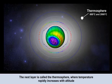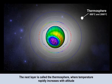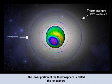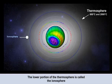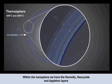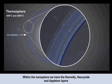Above the mesopause is a layer called the thermosphere, characterized by a rapid rise in temperature up to about 200 kilometres. Temperatures here can be between 600 and 2,000 degrees Celsius. The lower part contains a zone called the ionosphere, where high ionization levels allow long-wave radio waves to be reflected back to Earth. Where this reflection is at a maximum is at roughly 110, 160, and 250 kilometre levels — called the Kennelly, Heaviside, and Appleton layers respectively.